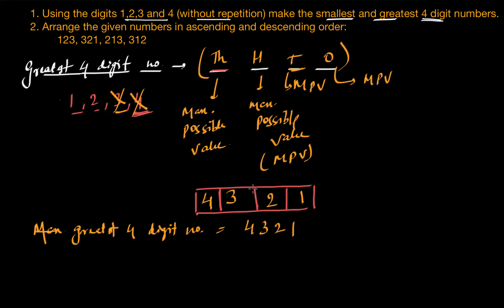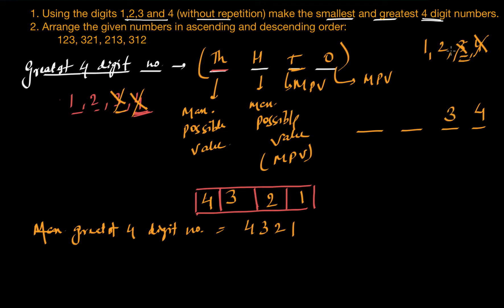Now you may be thinking — why did we do it this way? Let's verify. If we start a 4-digit number and put the maximum possible value in each place: 4, then 3, then 2, then 1 — that gives 4,321. Comparing 1,234 and 4,321, obviously 4,321 is greater.